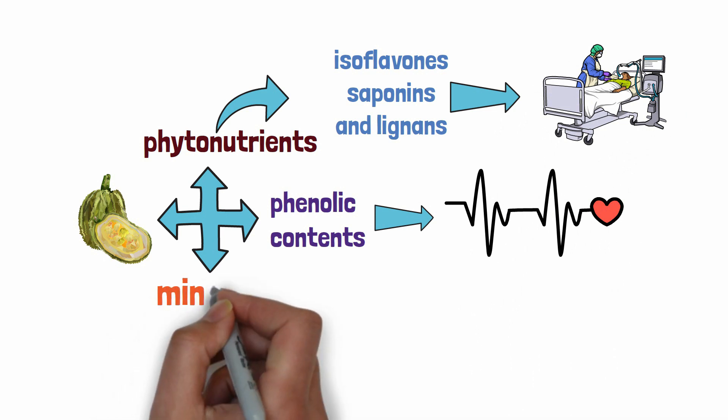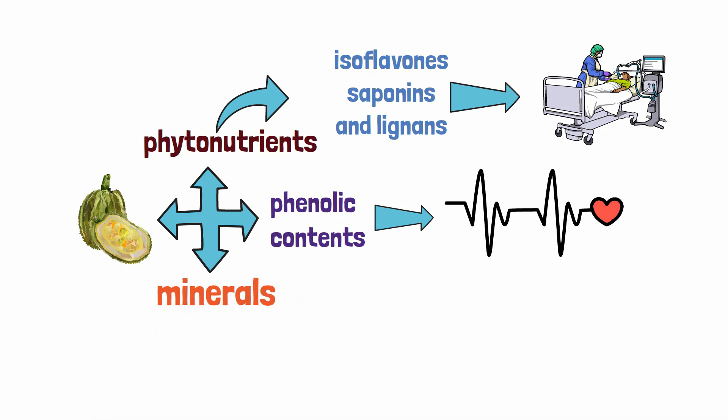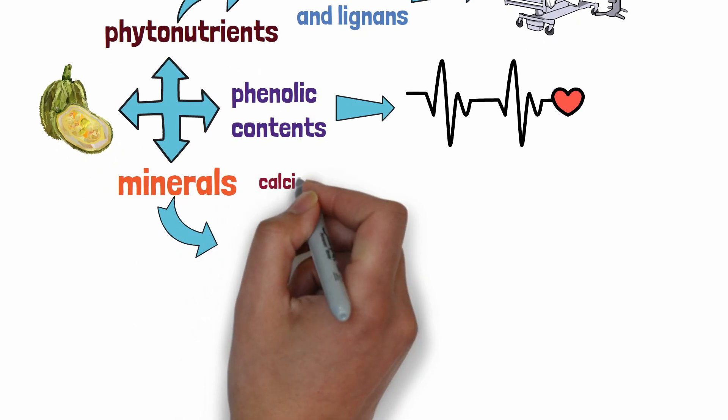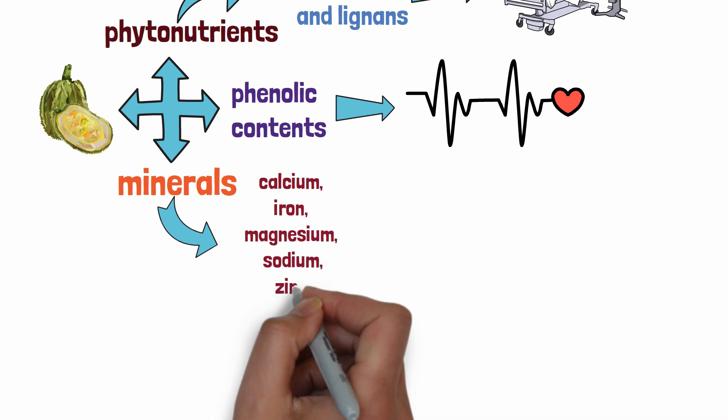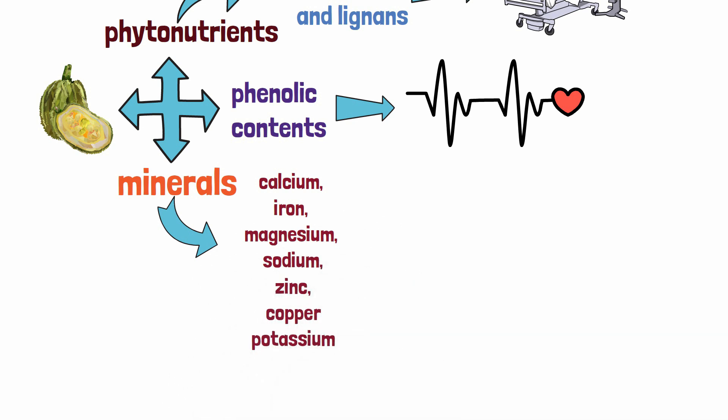Jackfruit is a great source of almost all kinds of minerals. We mentioned potassium before, but calcium, iron, magnesium, sodium, zinc, copper, etc. are also present in a good amount in jackfruit.